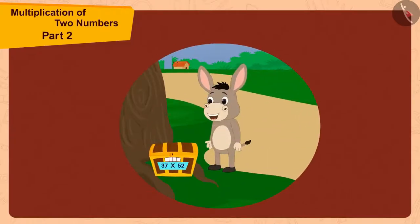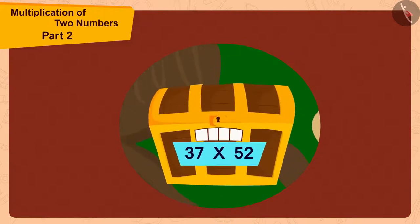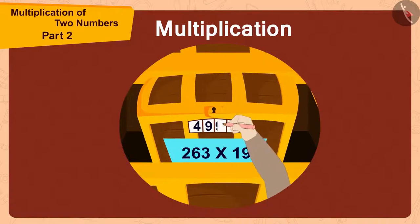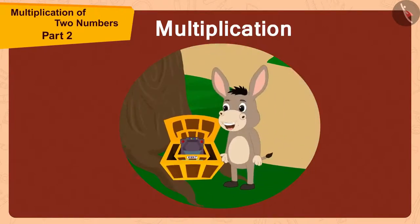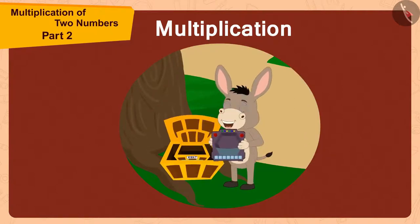In the previous video, we saw how Bhola opened the codes of the boxes using multiplication and found a unique toy from the small box. Now, let's see what is unique about this toy.